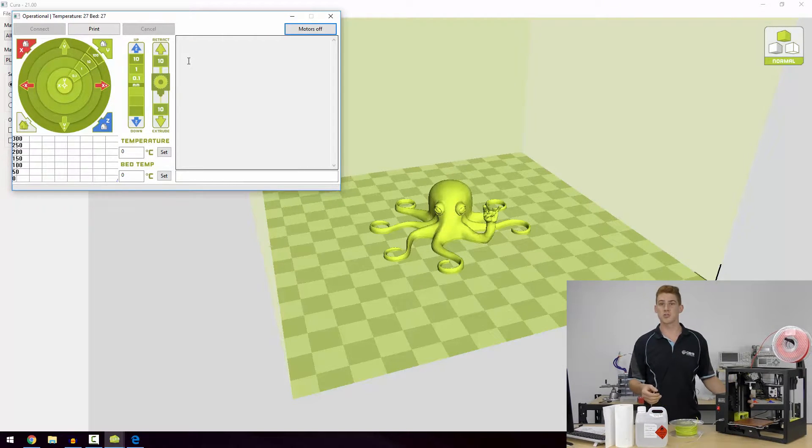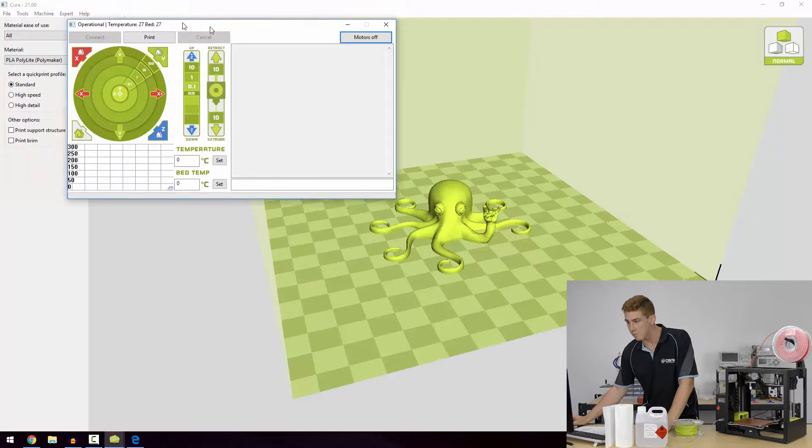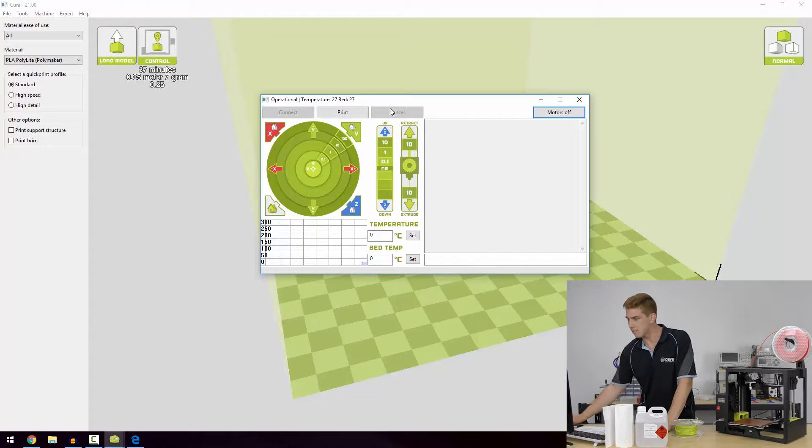I have to use the control interface within Cura to control it. What we're going to do is go in here—we've connected, we've got the printer temperature up the top here and the bed temperature just there. I'll move that into the middle. What we're going to do is move that X-axis across. We might move it the other way and get it nice and central.